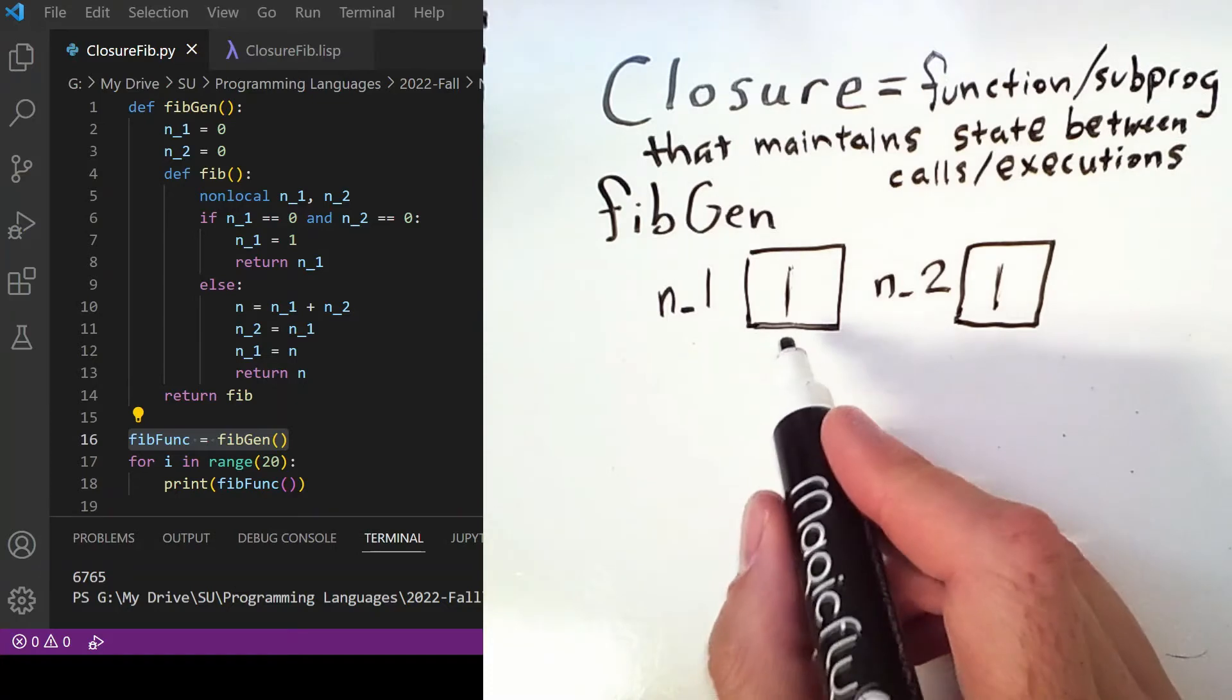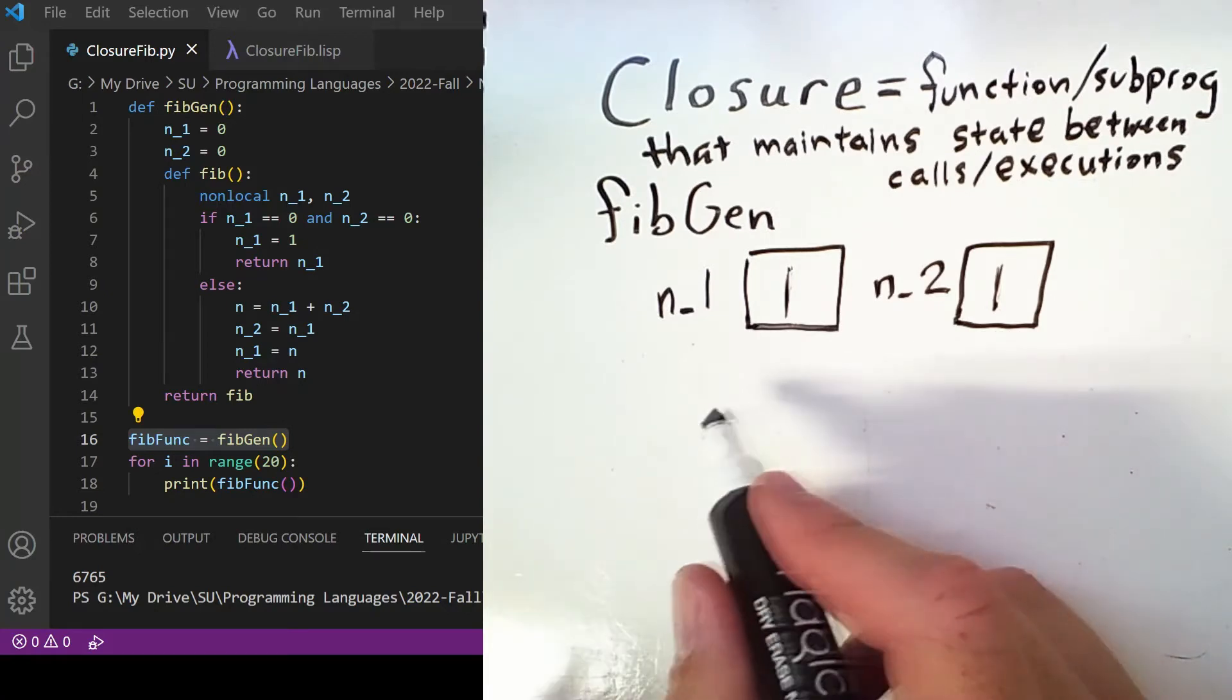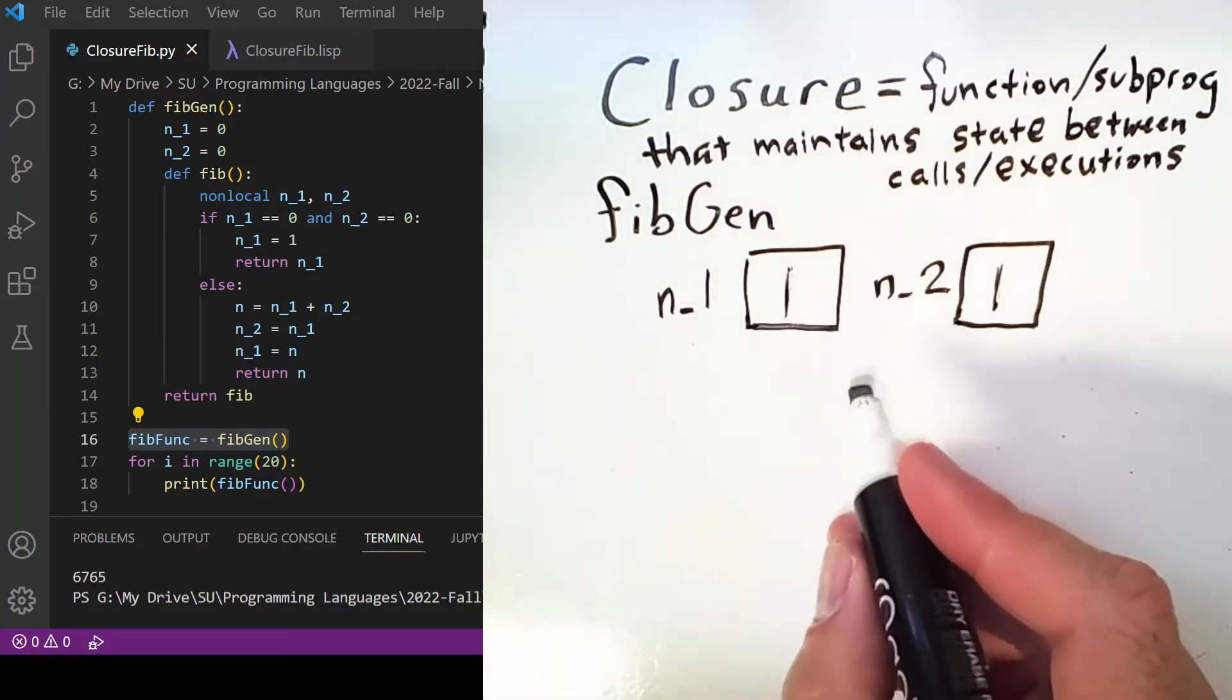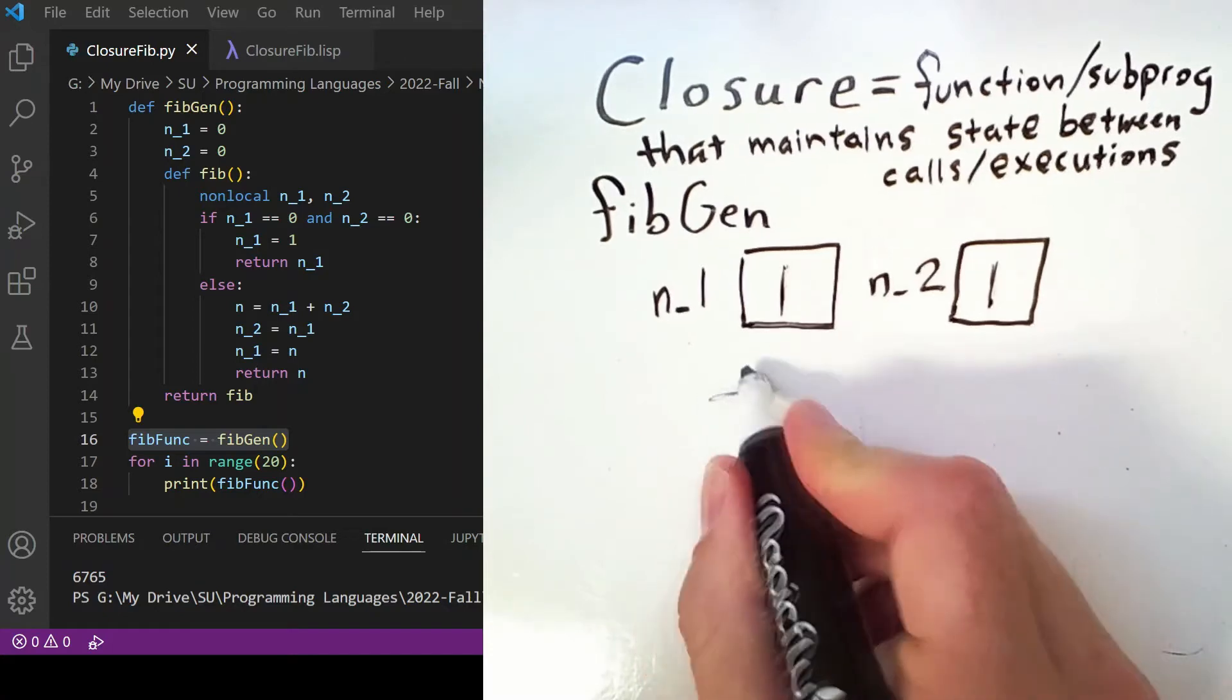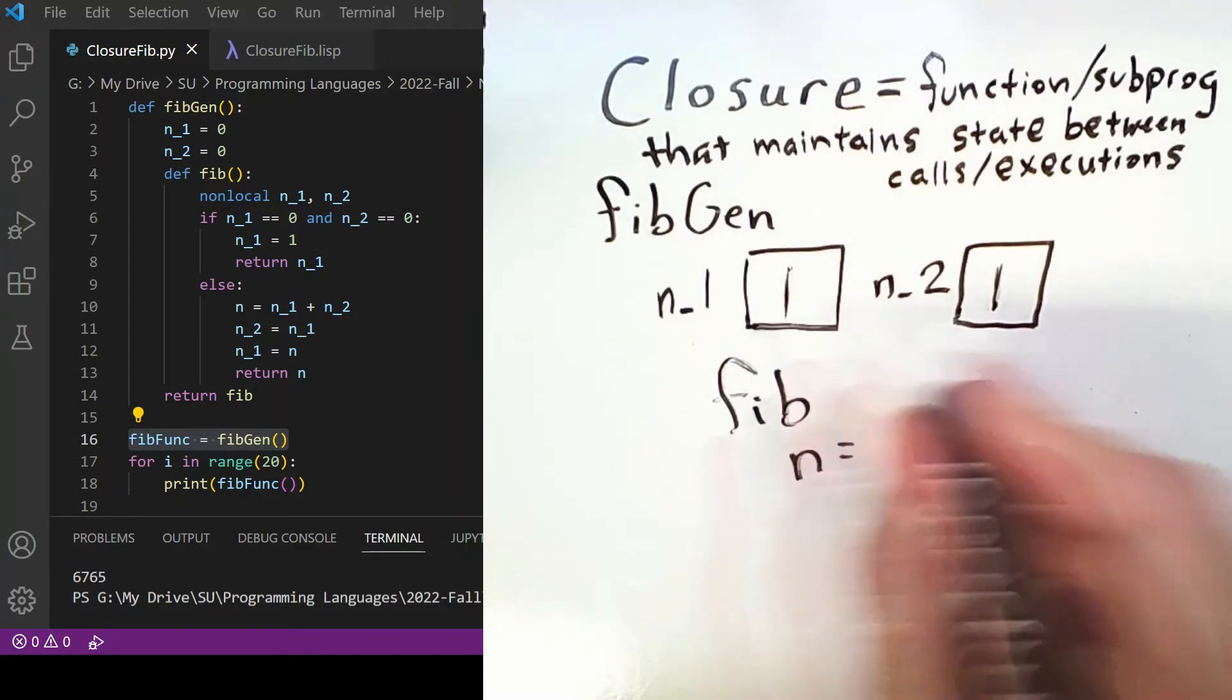But we've updated the state of these two local variables. If we call fibfunc again, then we once again refer to these non-local variable values, and this time inside of fib, n will equal the sum of those two things.